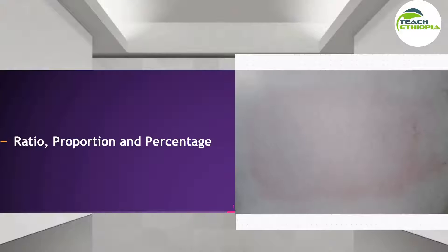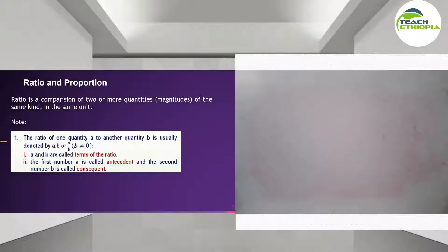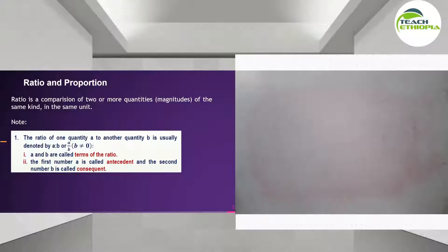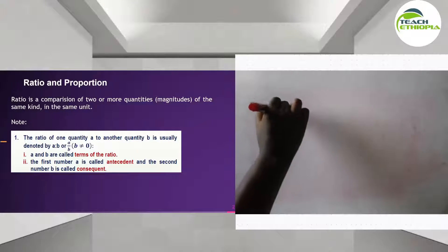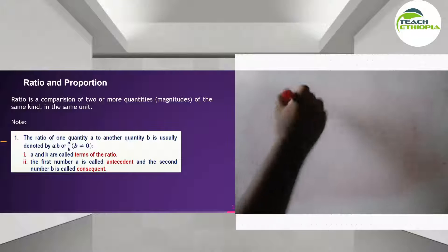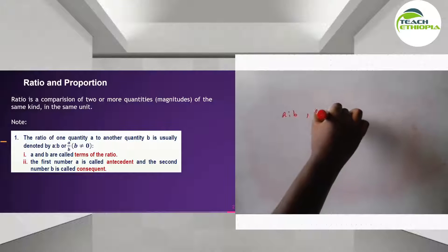Ratio is basically a comparison of two or more quantities. Ratio is denoted by a ratio b, or a over b, or a divided by b. Always remember that b has to be different from zero — it cannot equal zero.